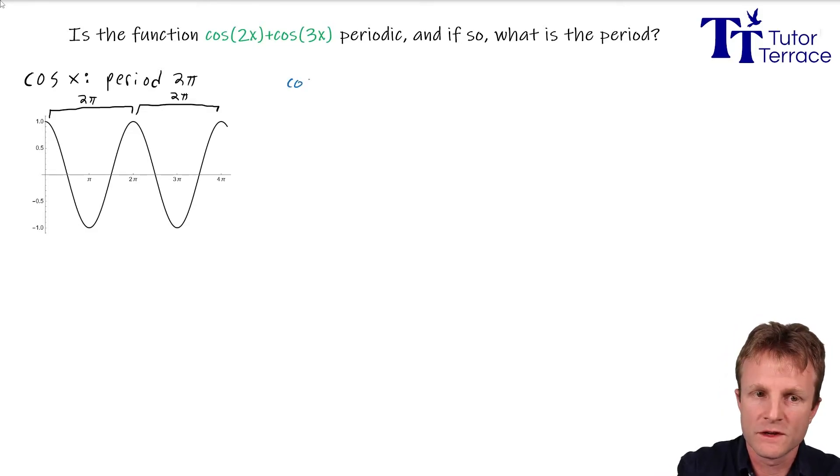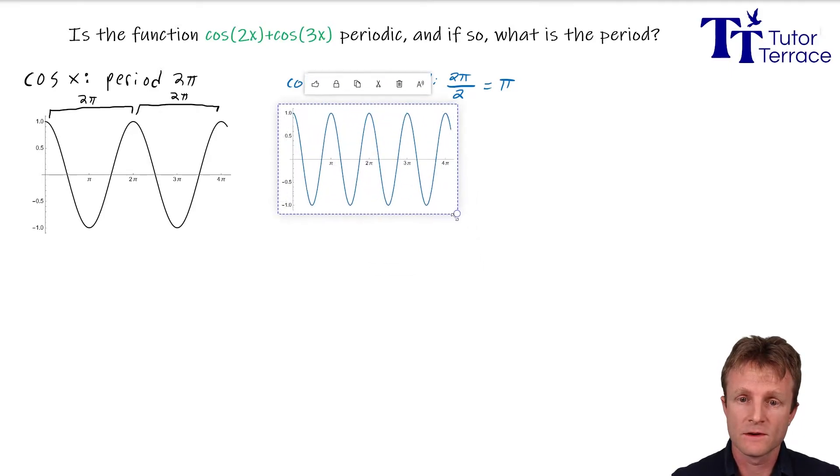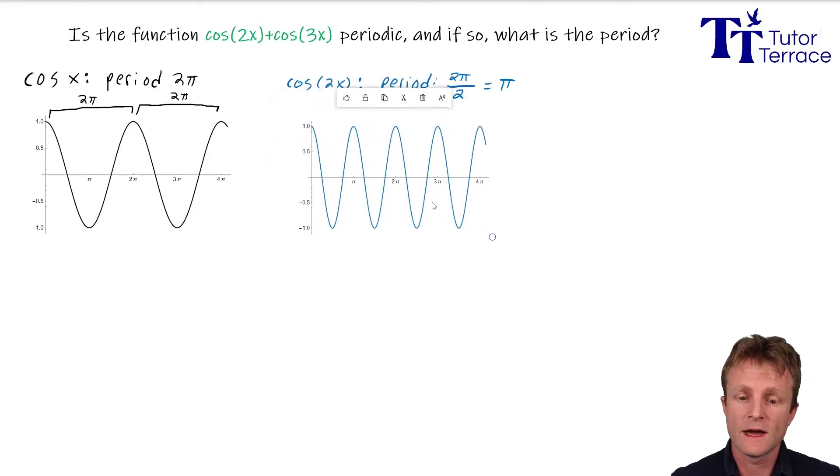Now, what about the function cosine of 2x? Well, whenever you have a function of x and you turn it into a function of 2x, it gets squished by a factor of 2. Squished, not stretched. So its new period is 2π, not times 2, but divided by 2. So it's going to have period π.